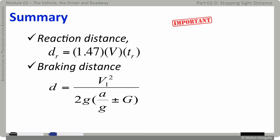To summarize parts C and D, the major takeaways are these three equations. Reaction distance, braking distance, and stopping sight distance. And now we are ready to do some more problems.